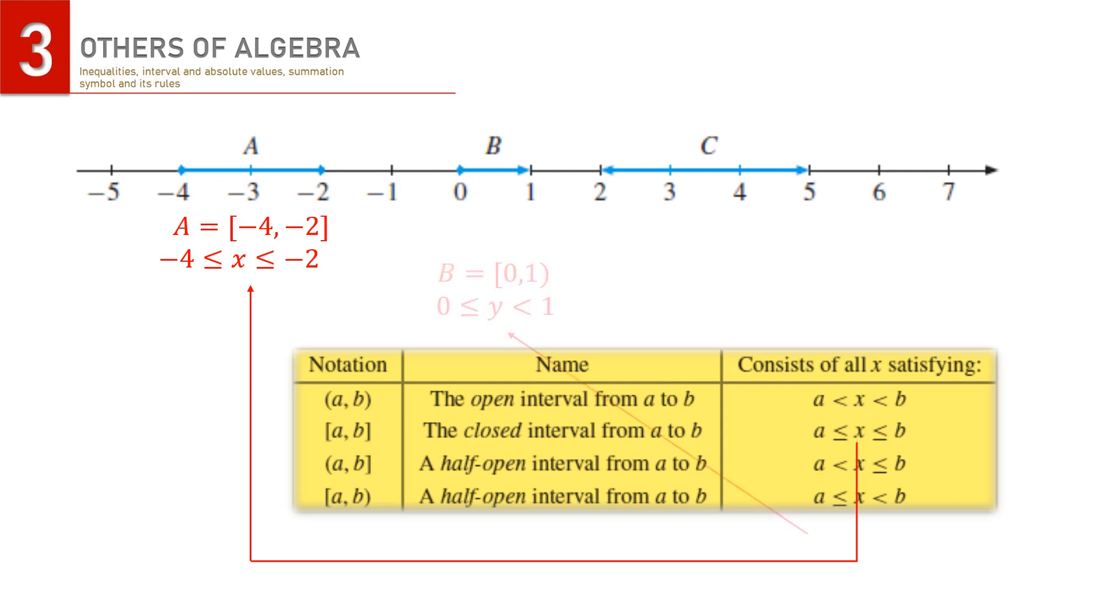B is the half-open interval. The value of y is closed at 0 but open at 1, or it is less than 1. And C is the example of open interval whose value of z is between 2 and 5. All the signs for the open interval have no equal sign.